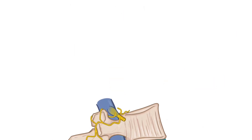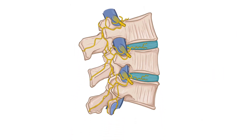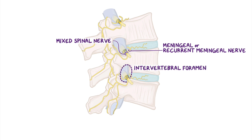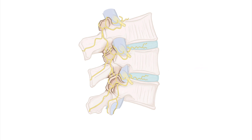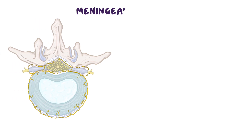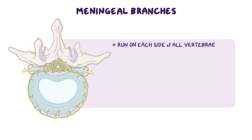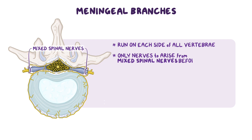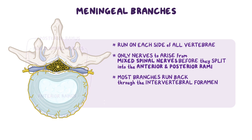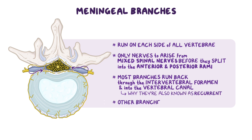Now let's talk about nerves. The entire vertebral column is innervated by small meningeal or recurrent meningeal branches that arise from mixed spinal nerves as they exit the intervertebral foramen. The only exception are the facet joints, which are innervated by articular branches arising from the medial branches of the posterior rami of spinal nerves. The meningeal branches, which run on each side of all vertebrae, are special because they're the only nerves to arise from mixed spinal nerves before they split into the anterior and posterior rami.